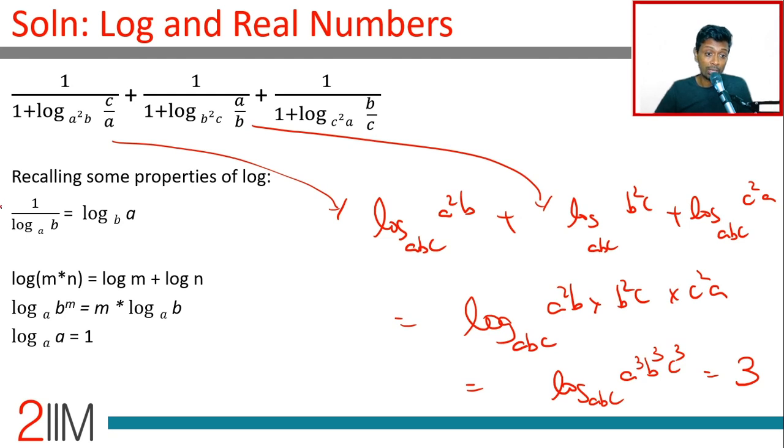The ideas we are using: 1 by log b to the base a is log a to the base b. Log of m times n is log m plus log n. Log a to the base a is 1. Log b to the power m to the base a is m log b to the base a. These are the four properties of logarithm we are using to manipulate and simplify this.